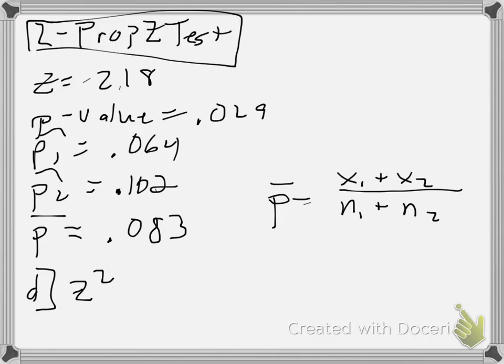The pooled proportion is the total number of successes (X1 plus X2) divided by the total sample size (N1 plus N2). Also, as a preview for part D: Z-squared is about 4.76 — hold that thought.